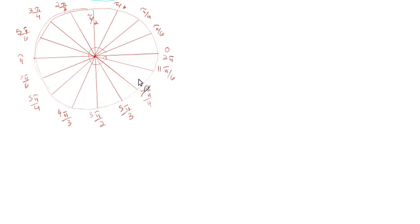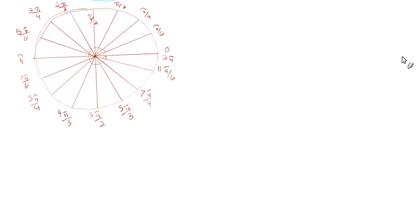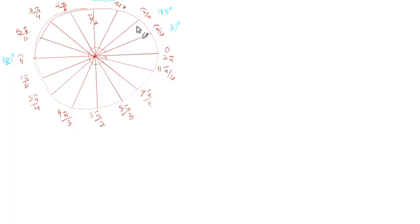How do these radian measures translate to angles in degrees? These are the common ones, though you could have any number of radians — a million π, π/1000, or even 5 radians with no π at all. To convert, note that π/6 is one-sixth of the way to π, and π clearly is half the circle, which is 180 degrees. So one-sixth of 180 is 30 degrees. Similarly, π/4 is one-fourth of 180, giving 45 degrees.